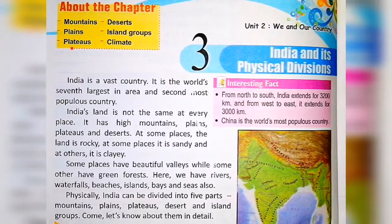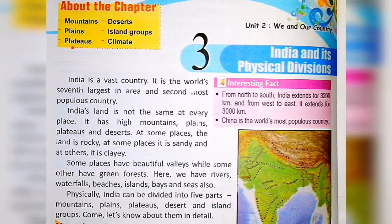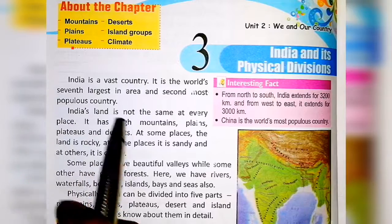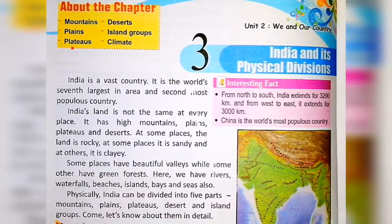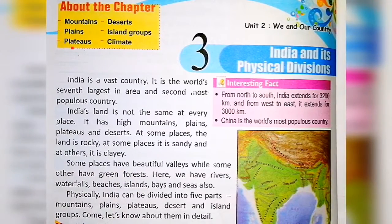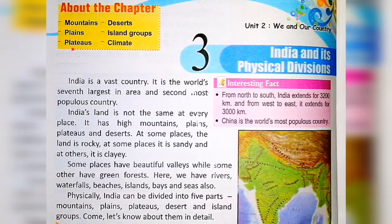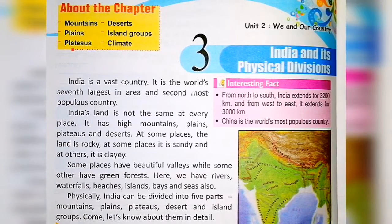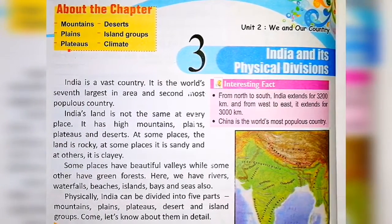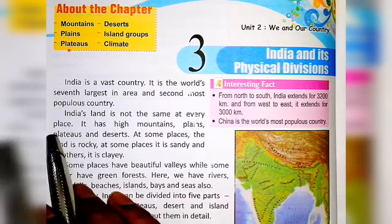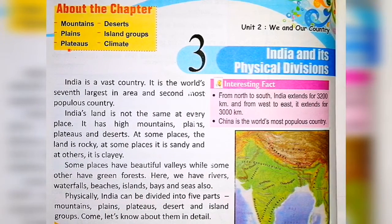India is a vast country. Vast means very big. It is the world's seventh largest country in area and the second most populous country.